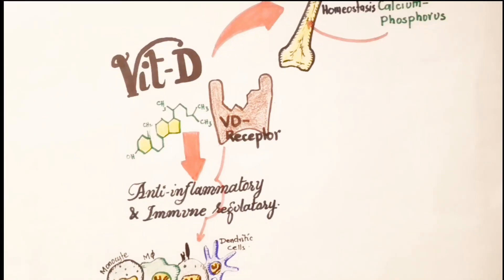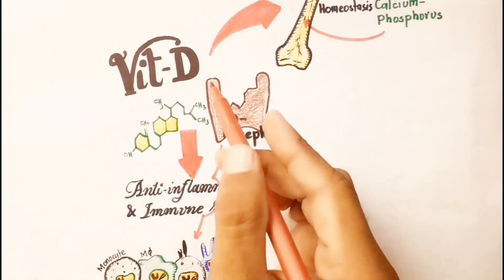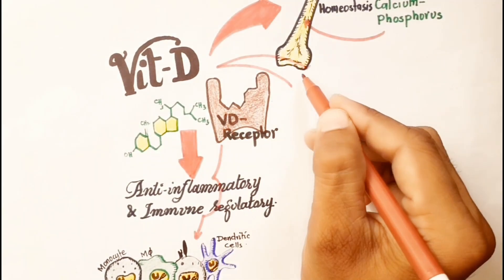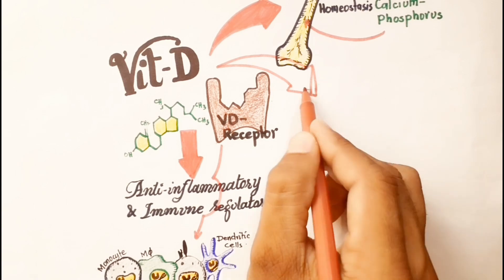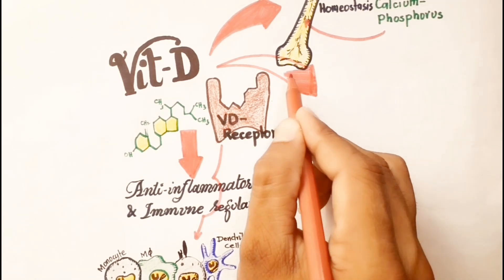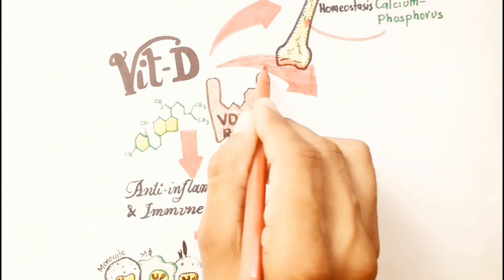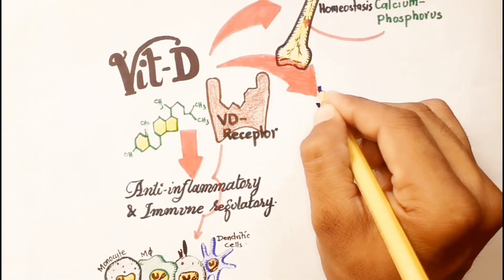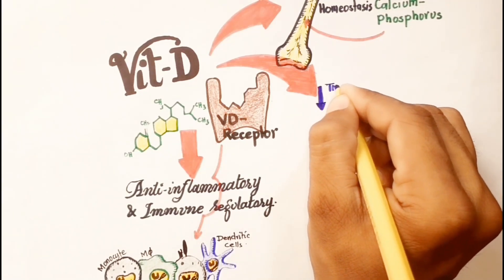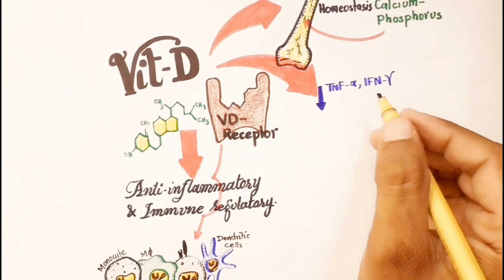It is verified that vitamin D and vitamin D receptor pathway together have an important anti-inflammatory function, as vitamin D markedly decreases pro-inflammatory cytokines such as TNF-alpha, interferon-gamma, interleukin-1 beta, and interleukin-8.